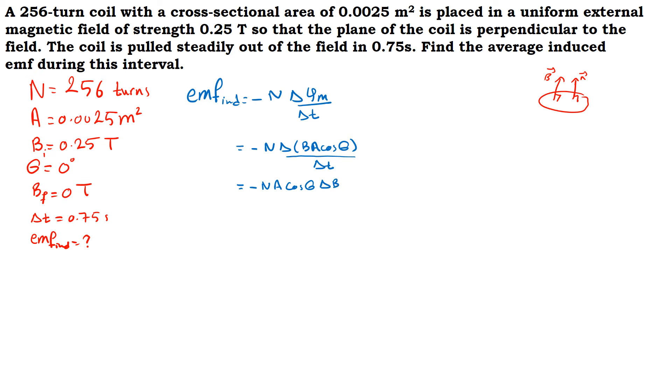We take the constant factors out: minus N A cosine theta, delta B over delta t.